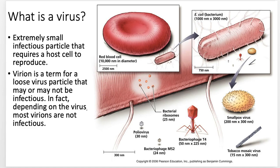When we talk about viruses there are other terms that we use. When we're talking viruses we say virions. A virion is a loose term for a particle, a viral particle, that may or may not be infectious. Some viruses generate progeny where only one or two percent are actually infectious, but that 98 percent that's not infectious are still viral particles and we call those virions. It just depends on your virus — some viruses have a lot of viable virions, some not so much.